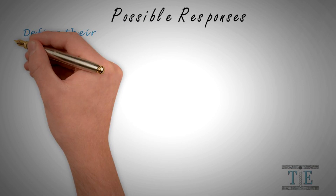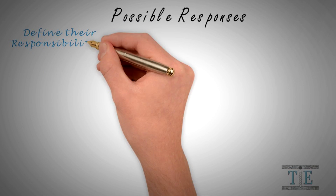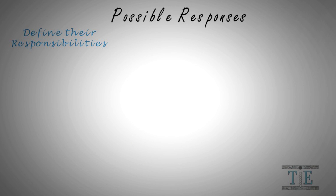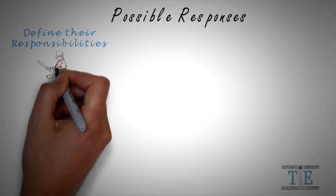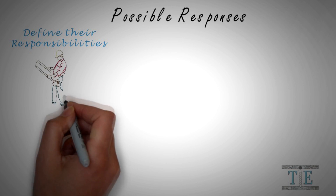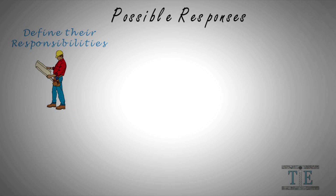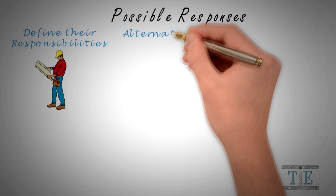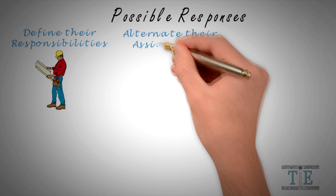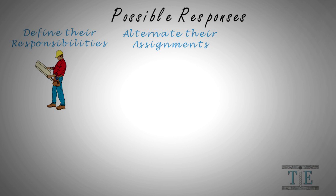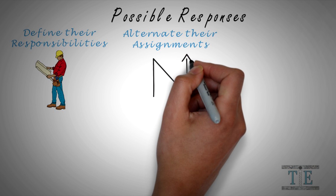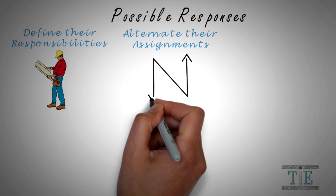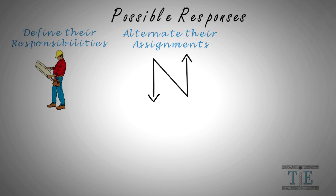First, define their responsibilities. Some teachers are uncomfortable telling paraprofessionals what to do, but it's ultimately the supervisor's responsibility to clearly define their responsibilities. Second, alternate their assignments. Paraprofessionals often get too close to the students and too comfortable with the teachers. Alternating assignments for paraprofessionals helps break those patterns.